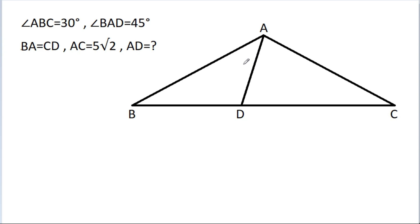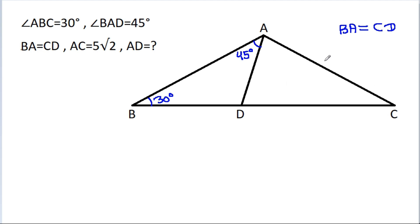In this video, we have been given that angle ABC is 30 degrees, angle BAD is 45 degrees, BA is equal to CD, and AC is 5 times the square root of 2. Then we have to find AD.